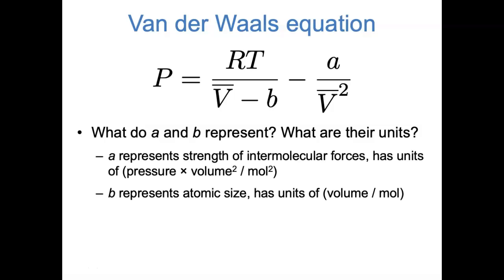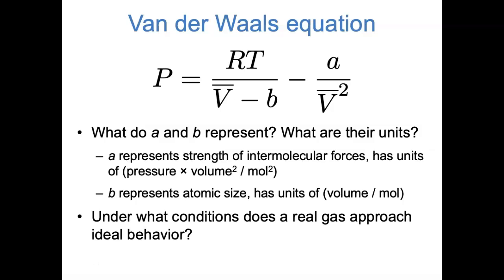To summarize: a represents the strength of intermolecular interactions, with units of pressure times molar volume squared; b represents atomic or molecular size, with units of molar volume. A real gas approaches ideal behavior when the molar volume is large relative to a and b — the term a/V-bar² vanishes, and V-bar minus b approaches V-bar — recovering P equals RT over V-bar, the ideal gas law.